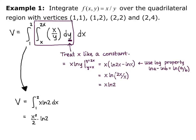So the volume equals the integral from 1 to 2 of x natural log of 2 dx. That gives x squared over 2 times natural log of 2, evaluated from x equals 1 to x equals 2. Plugging in the bounds: (4 over 2 minus 1 over 2) times natural log of 2, which equals 3 halves natural log of 2.